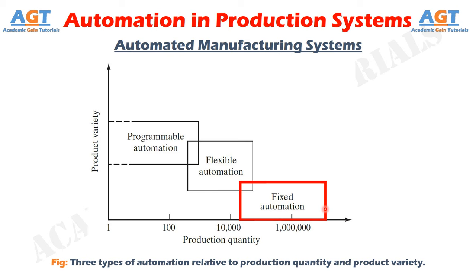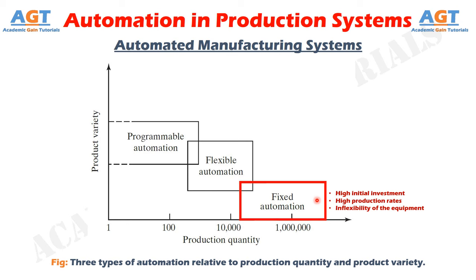Typical features of fixed automation are high initial investment for custom engineered equipment, high production rates, and inflexibility of the equipment to accommodate product variety. The economic justification for fixed automation is found in products that are made in very large quantities and at high production rates. The high initial cost of the equipment can be spread over a very large number of units, thus minimizing the unit cost relative to alternative methods of production.